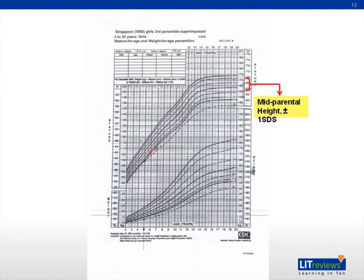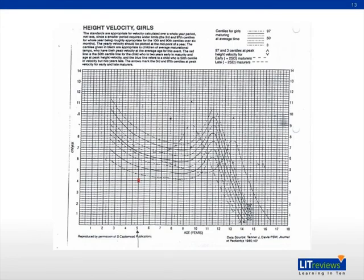This is an example of a growth chart for girls aged 2 to 20 years, showing the girl's height plotted serially over time, as well as her mid-parental height ±1 standard deviation. You can extrapolate from this target centile range to determine if the child is growing within her genetic potential or not. The next chart shows height velocity over time; in this example, the patient's growth velocity at age 5 years was less than the third percentile for her age, which is abnormally slow and needs to be addressed.